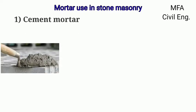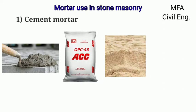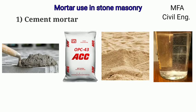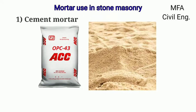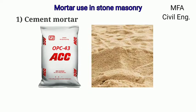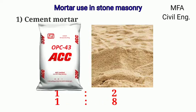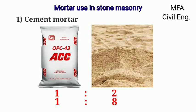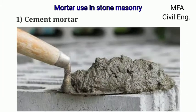The paste prepared by mixing cement, sand, and water in a suitable proportion is called cement mortar. In cement mortar, the general proportion of cement and sand for stone masonry varies from 1:2 to 1:8 — that is, one part of cement and 2 to 8 parts of clean sand. Note that cement mortar must be used within half an hour after mixing.